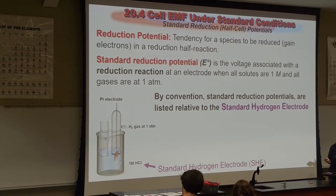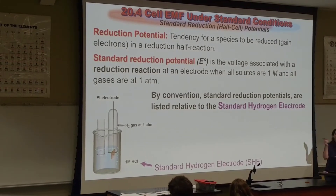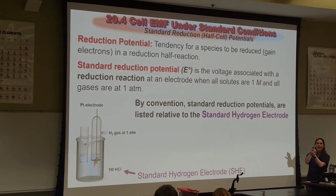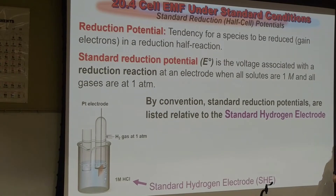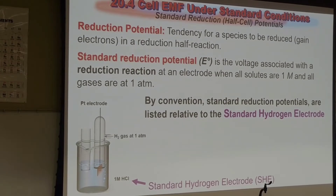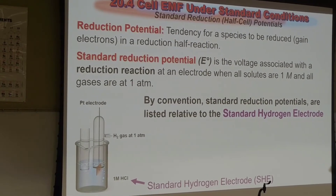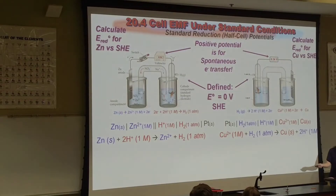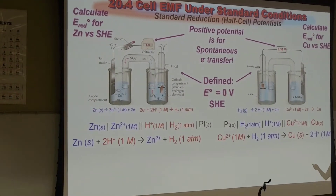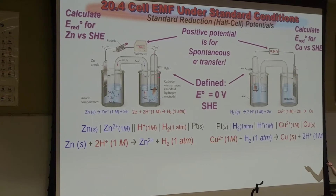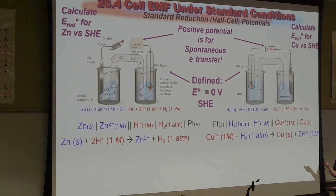We are going to use the standard hydrogen electrode, and just know that this is just one way of finding something to assign. We used hydrogen as our standard and then compared the ability to oxidize and reduce various things to get a scale. We can use our standard here to calculate the unknown and identify from the cell potential what this unknown might be.